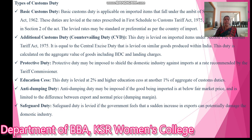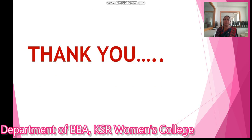Next is Anti-Dumping Duty. Anti-Dumping Duty may be imposed if the goods are being imported at below fair market price, and is limited to the difference between the export price and normal price. Next is Safeguard Duty. Safeguard Duty is levied if the government feels that a sudden increase in imports can potentially damage the domestic industry. These are the types of Custom Duty. Thank you.